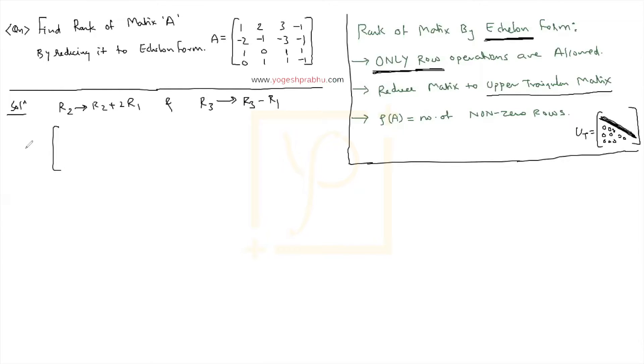So let us perform these operations. The matrix A will become 1, 2, 3, minus 1 first row as it is. Then the second row let us solve this. Multiply by 2 and add, this becomes 0. Multiply by 2, this becomes 4. 4 and minus 1 is going to be 3.